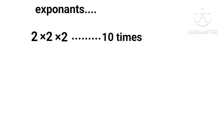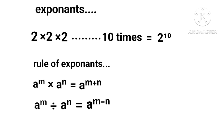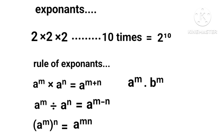Suppose we have to multiply 2 into 2 into 2 extended 10 times. We can write this as 2 to the power 10, where 2 is the base and 10 is called its exponent. Some rules of exponents: a to the power m multiplied by a to the power n equals a to the power (m plus n); a to the power m divided by a to the power n equals a to the power (m minus n); a to the power m multiplied by b to the power m equals (ab) to the power m.